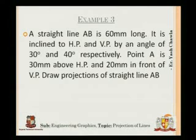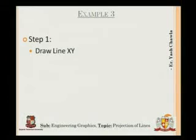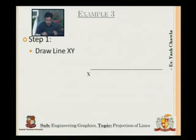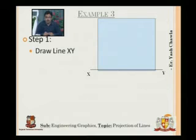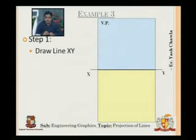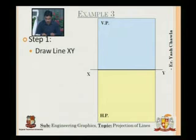The line makes two angles: 30 degrees with the horizontal plane and 40 degrees with the vertical plane. Visualize two vectors going in different directions — it is like finding a resultant, but the drawing steps are different from vector problems. We first draw line XY, with HP below and VP above.